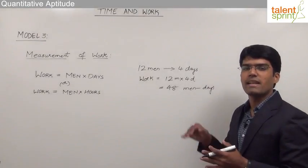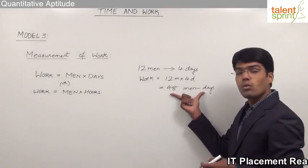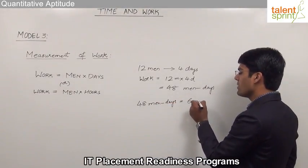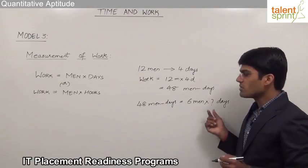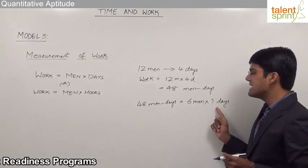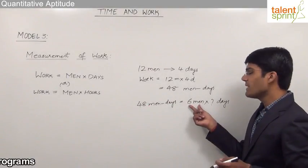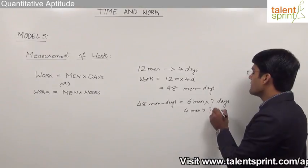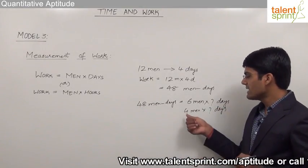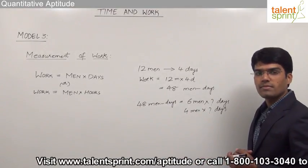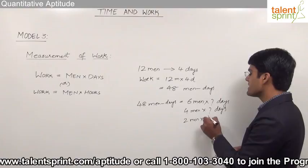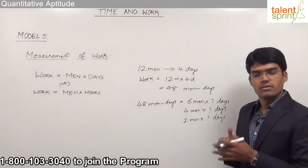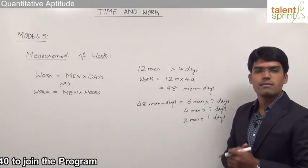Now suppose 6 men have to finish the same work — how many days will be required? We know the total work is 48 man-days. So 6 into 8 equals 48, meaning 8 days are required. Similarly, if 4 men work, 12 days are required since 4 × 12 = 48. And for 2 men, 48 = 2 × 24, so 24 days are required. This is how we use work in terms of men into days.